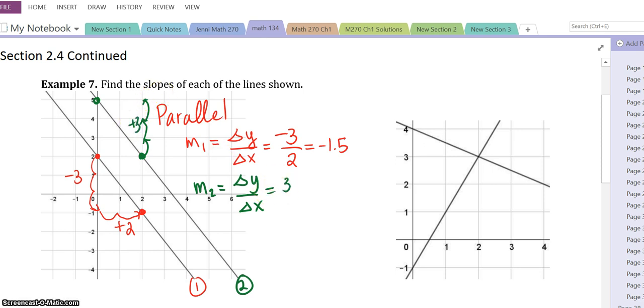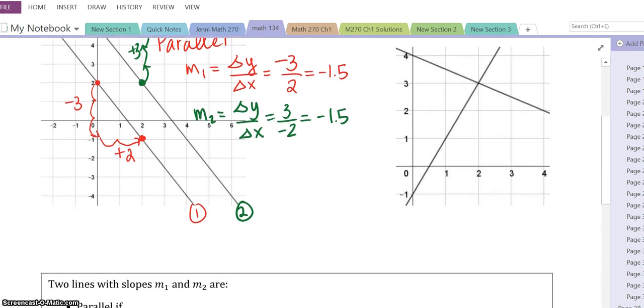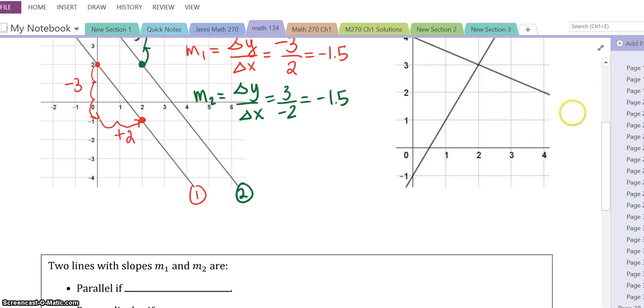And then I'm going to go to the left. Remember when I go to the left it's negative. So negative 2. Notice it's still 1.5. So you notice the slopes for parallel lines are the same. So if I go down here, if two lines with slope m1 and m2 are parallel if m1 is equal to m2.